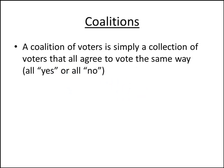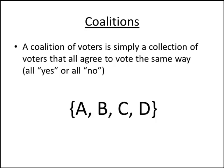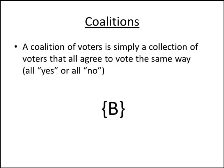For the Banzhaf Power Index, we need to understand coalitions. A coalition of voters is simply a collection of voters that all agree to vote the same way, either all voting yes or all voting no. For example, we could have a coalition with A, B, and C in it, a coalition with all four voters, a coalition with only one voter, or even a coalition with no voters.